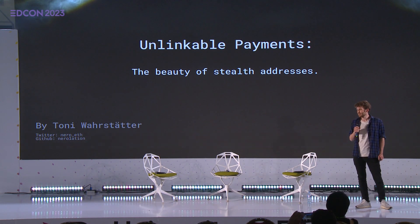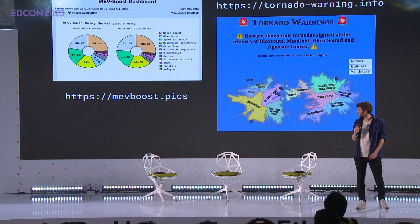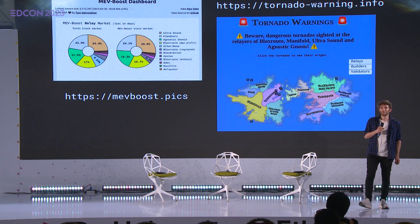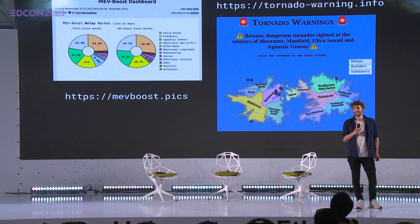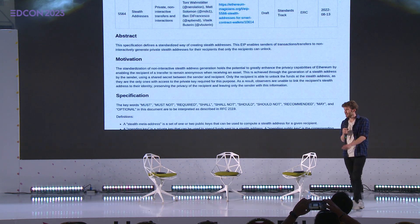Let me quickly introduce myself to those that don't know me yet. My name is Toni Warstetter. I work at the Vienna University of Economics and Business doing mostly privacy stuff, focusing on Bitcoin and Ethereum privacy. Some of you might know me from other projects like MathBoost.pix or Tornado Warning, which are more or less hobby-ish projects.